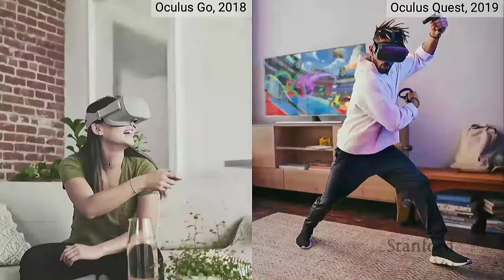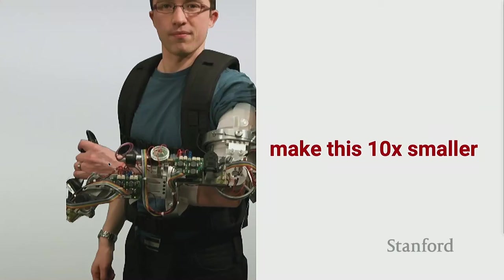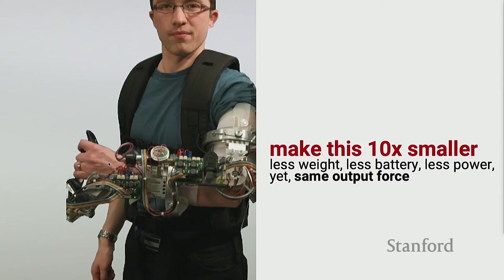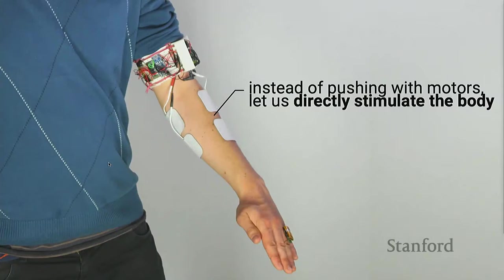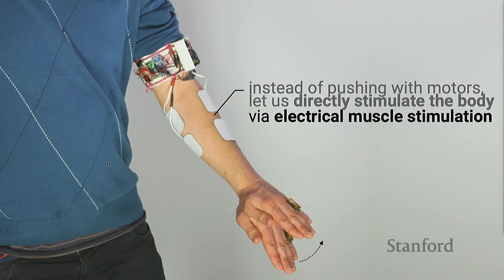We wanted a still-realistic force feedback device but without those constraints — trying to circumvent physics creatively to get the same output force. We got inspired by medicine and neuroscience, and took this technique that exists since the 1960s called electrical muscle stimulation (EMS). When you apply a tiny electrical impulse over a pair of electrodes, your hand actually moves upward involuntarily — because muscles are tiny electrical machines and always react in the presence of an electrical current.